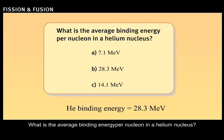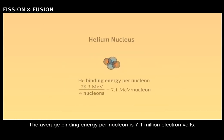What is the average binding energy per nucleon in a helium nucleus? Correct. The average binding energy per nucleon is 7.1 million electron volts.